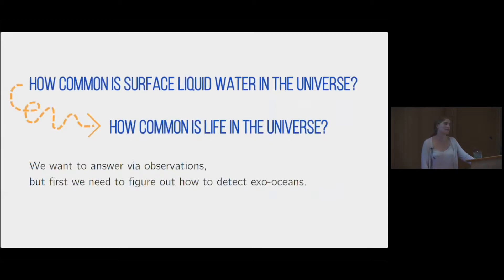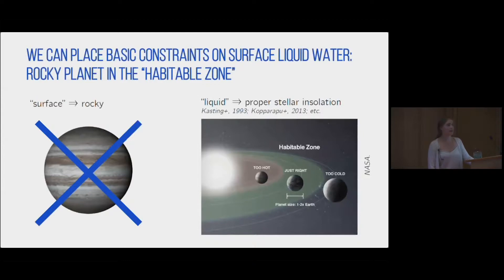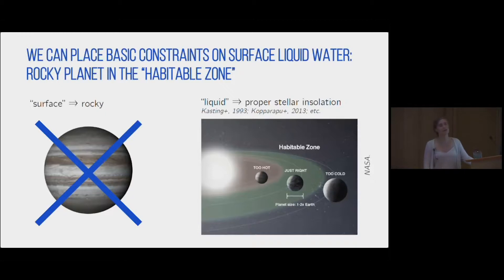We want to answer this via observations, because water distribution during planetary formation via models is a bit uncertain. So we really want to constrain this observationally. But first, we need to figure out how we can actually observe these exo-oceans. Just from the phrase 'surface liquid water,' looking at these individual words, we can put pretty basic constraints on where we could possibly find surface water. First, we're talking about a surface, so we want a rocky planet. Second, we want liquid water, so that tells us about a temperature regime based on stellar insolation. This is kind of the state of the art of observations right now — what we can tell about the potential for liquid water.